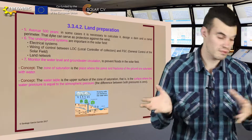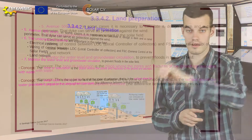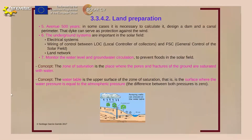The underground systems are going to be very useful to communicate the power block and the solar field. That includes electrical systems, wiring of control between LOC — that is, the local controller of collectors — and FSC, the general control of the solar field, which are located in the power block. And finally, the land network, which are the electrical systems in the solar field.